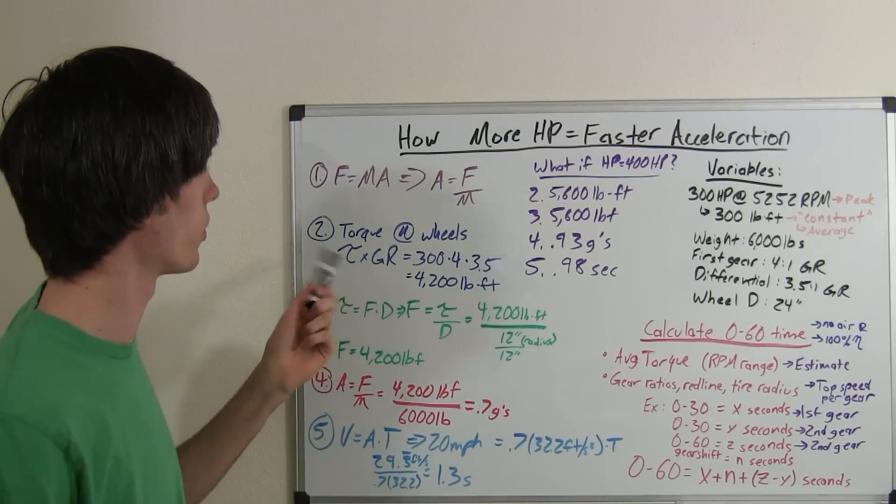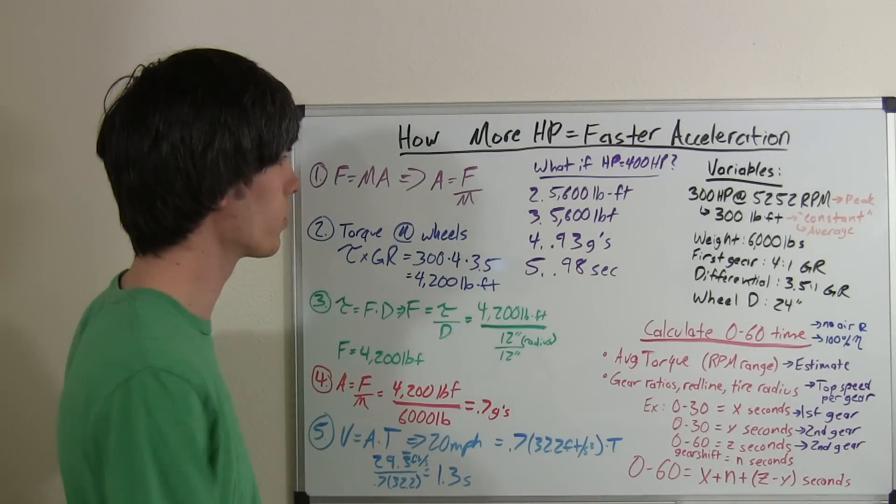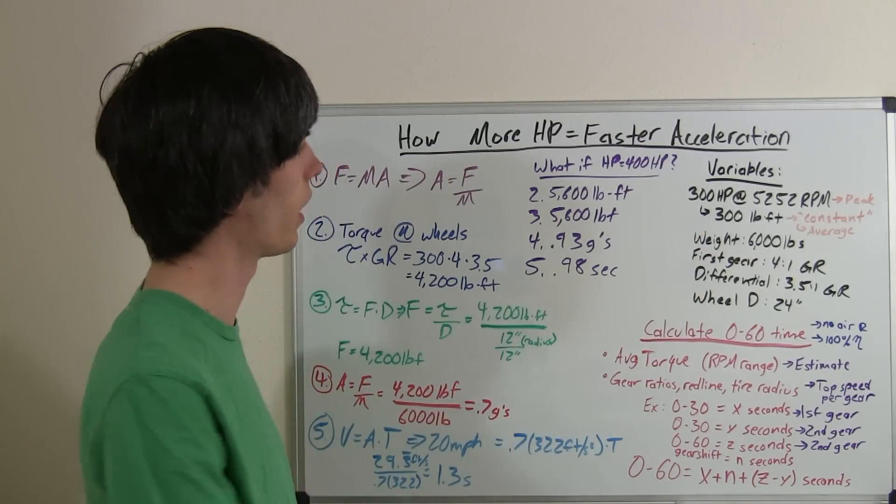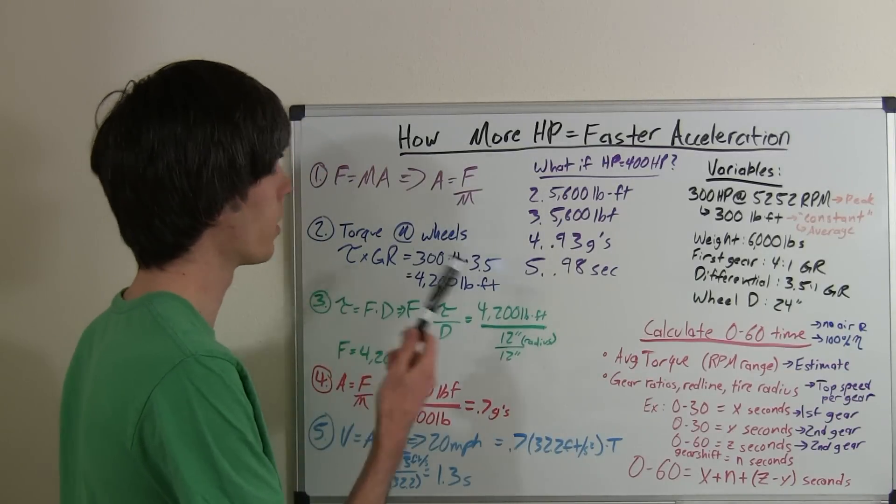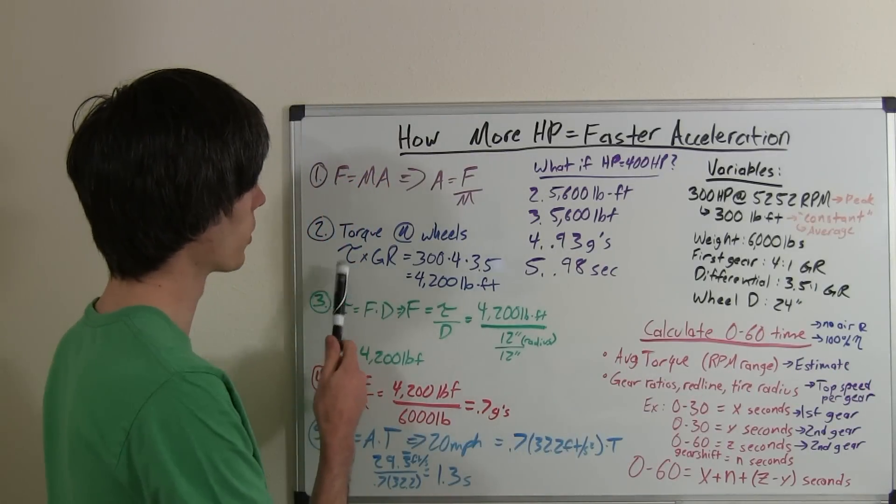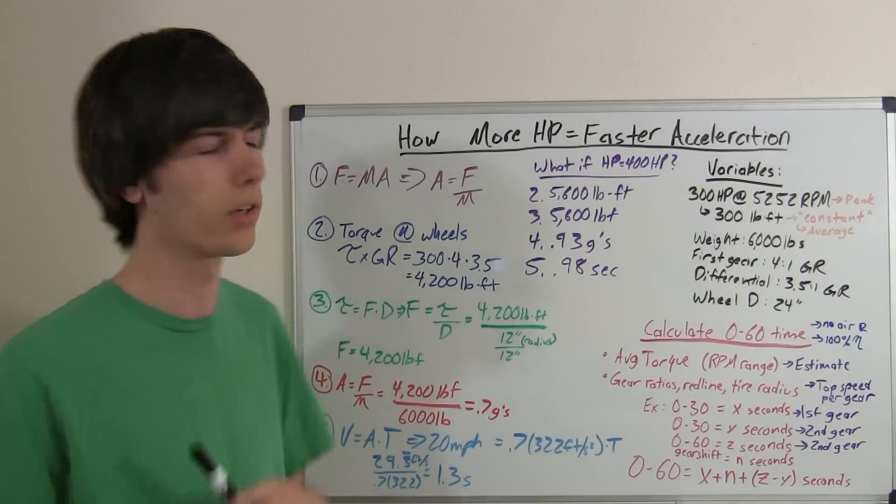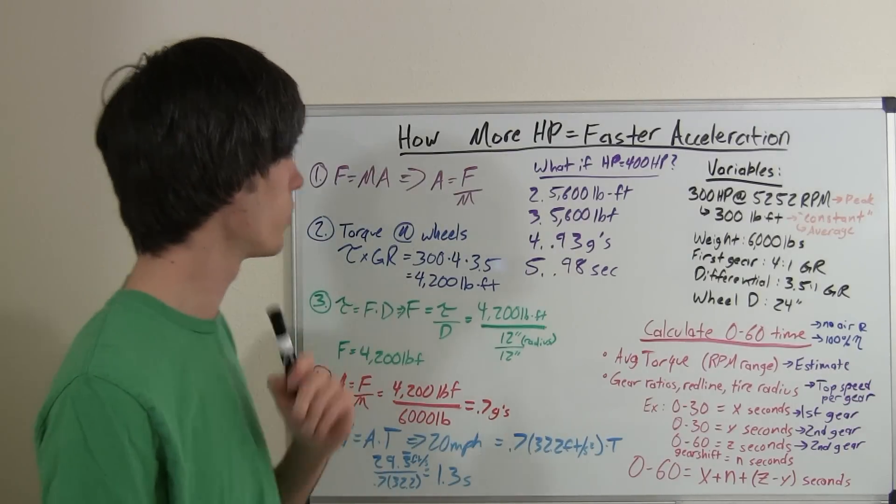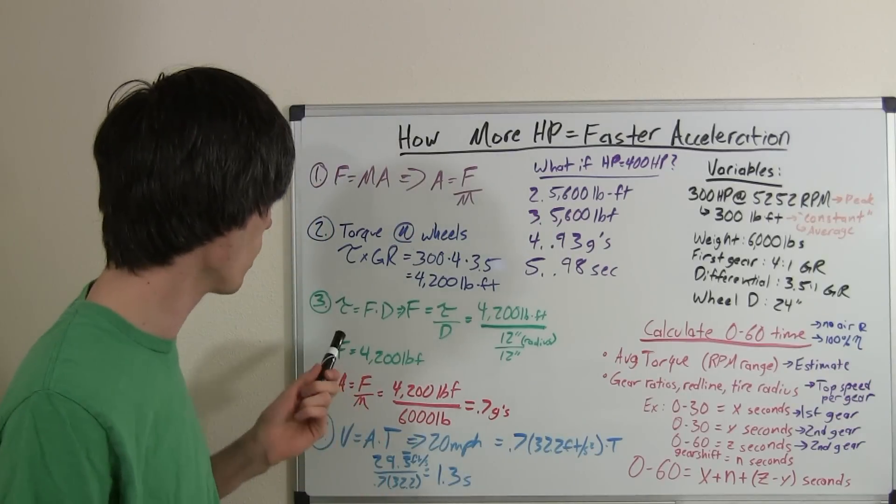So, next, what we want to do is find the torque at the wheels. So, we know our torque is 300 pound-feet. And we know our gear ratios, 4 to 1 and 3.5 to 1. So, all we need to do is multiply the torque by the gear ratio. 300 times 4 times 3.5, 4,200 pound-feet of torque.